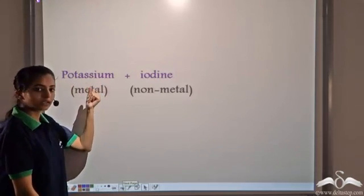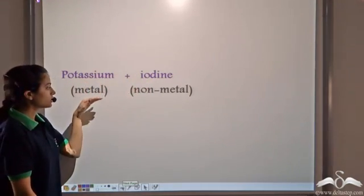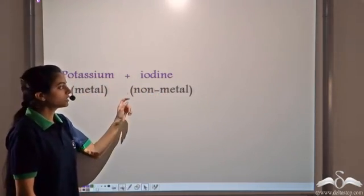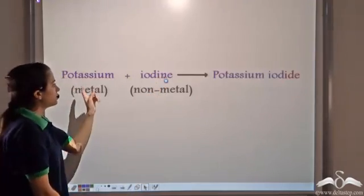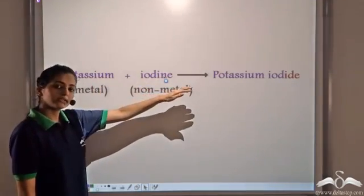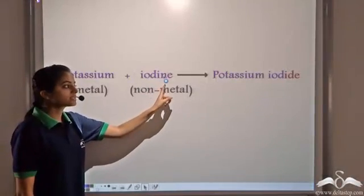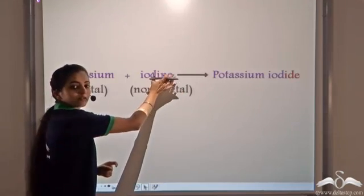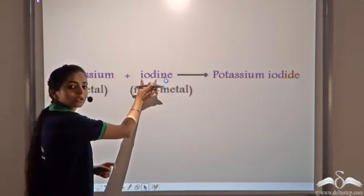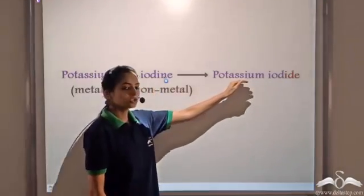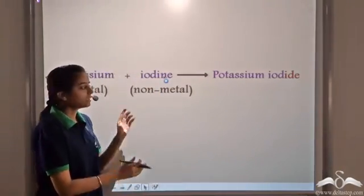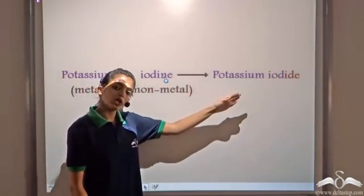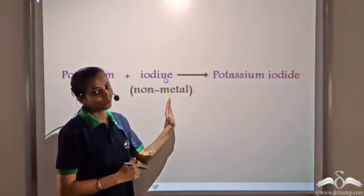Similarly, say we have another compound formed by potassium and iodine. Potassium is a metal and iodine is a non-metal. We first name the metal — potassium — as it is. The non-metal gets the suffix "-ide", which is merged with the name itself. So we get potassium iodide. Whenever a compound has a metal and non-metal, we first name the metal, then the non-metal with the suffix "-ide" added.